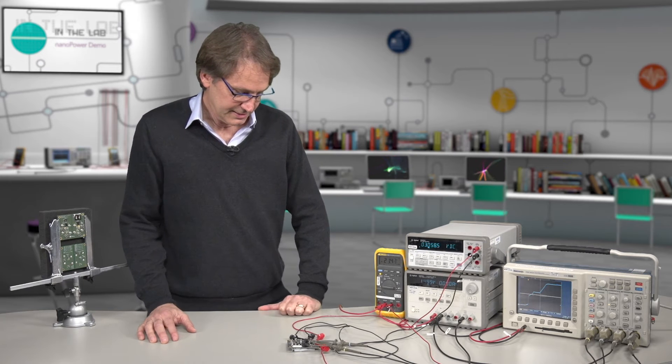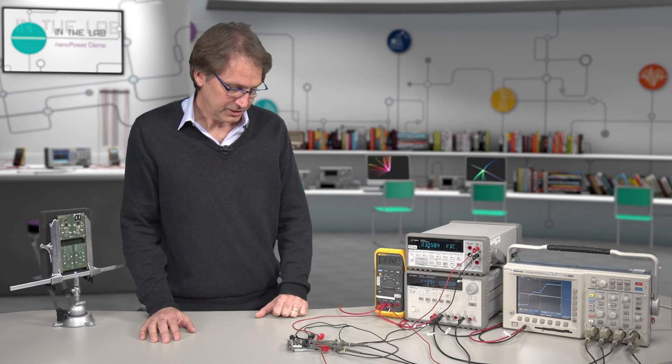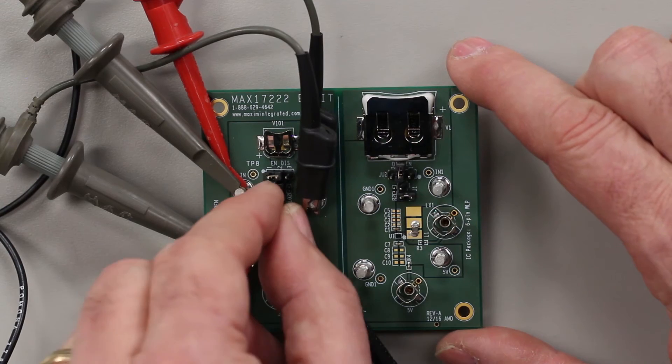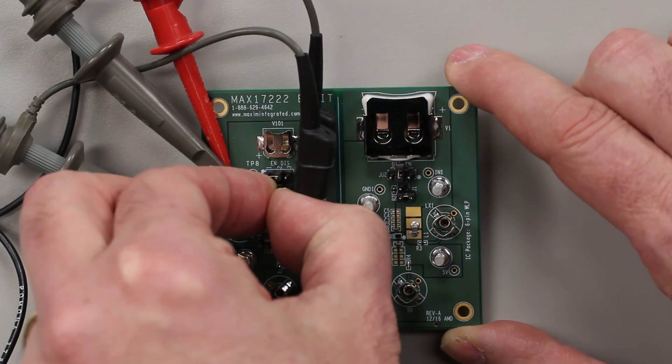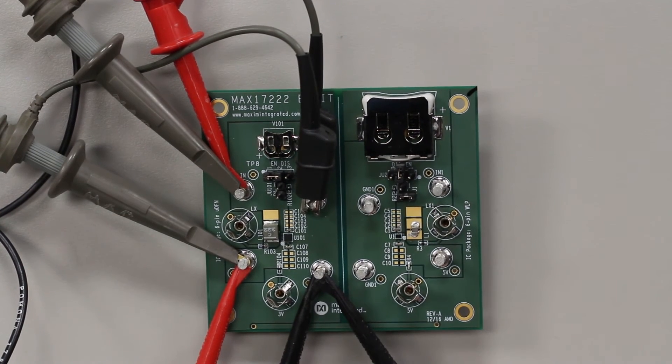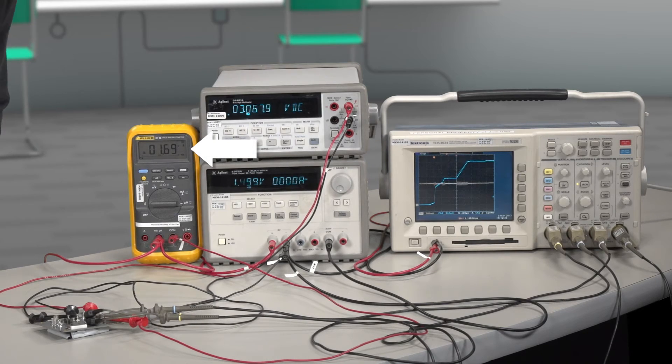The way that this adds quiescent current can be corrected by having the enable driven through a 33 megaohm resistor. So when I insert the 33 megaohm resistor I should see the quiescent current drop and it does.